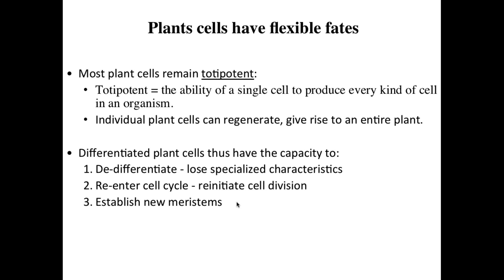Unlike humans, where there are terminal cell fates that you can't return from, there's no such thing in plants. You can take a 20-year-old cell that has been around with a certain cell fate, bathe it in an appropriate cocktail of hormones, allow it to become completely de-differentiated — meaning it loses all of its specialized characteristics — and then bathe it with a different cocktail of plant hormones to establish new meristematic tissue and create an entirely new plant.